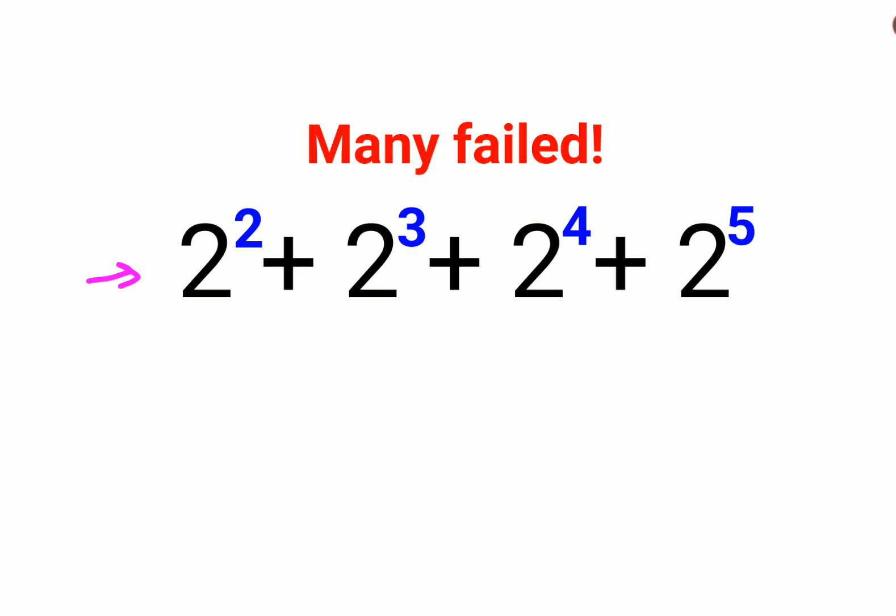You can ideally put all the values and add them, that's fine. Otherwise you can actually simplify this. Break this into parts of 2's. Here what we can take common is 2^2.